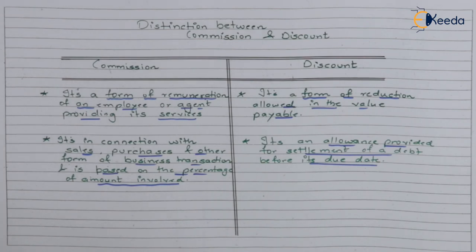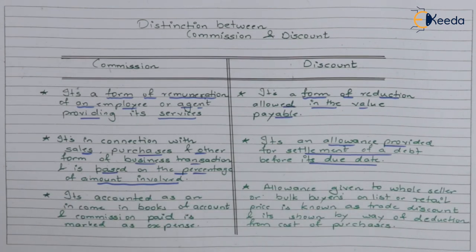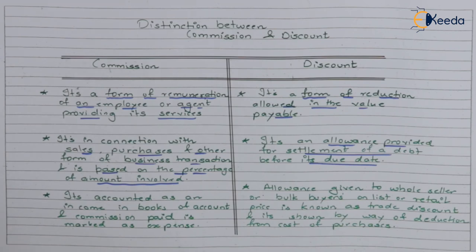The last point to discuss about these two terms: in accounting terms, commission can be either income or an expense. When commission is received, it is a form of income. However, if you are paying commission for a service provided to you by someone else, then in such a situation it is recorded as an expense.